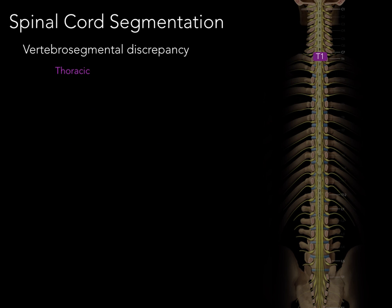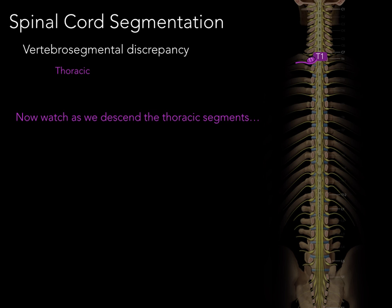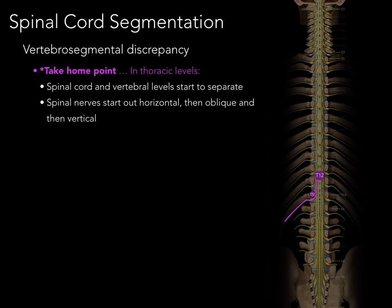In the thoracic region, at T1, the spinal cord level, vertebral level, and spinal nerve are adjacent. In the upper thoracic levels, spinal cord and vertebral levels are adjacent, but from T1 downward all spinal nerves exit below their associated vertebra. As we descend the thoracic segments, watch what happens between the spinal cord and vertebral levels — they start to separate. This is where vertebral segmental discrepancy begins. Spinal nerves start out horizontally, then go obliquely, and further down they course vertically in the vertebral canal.